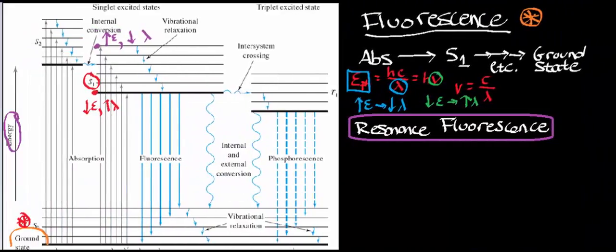Coming back to this diagram, we talked about how you can excite electrons into higher energies in the singlet excited state. If you're at energies above the red dot — anywhere higher up — there has to be some vibrational relaxation until you get back down to this energy denoted by the red solid line. Anything absorbed by a photon at higher energy requires vibrational relaxation to reach that minimum. There's a big difference between normal fluorescence and the special case we call resonance fluorescence.